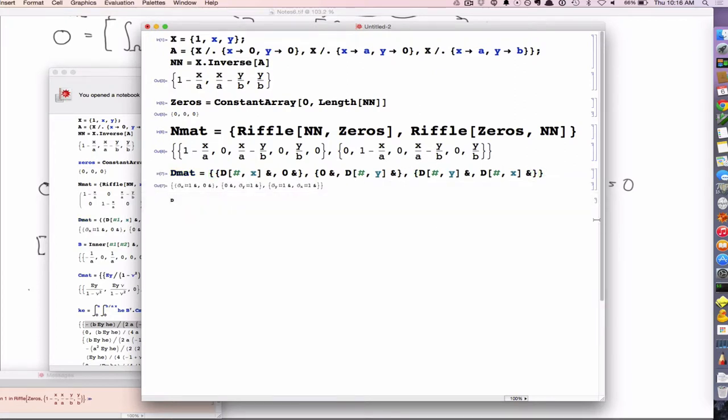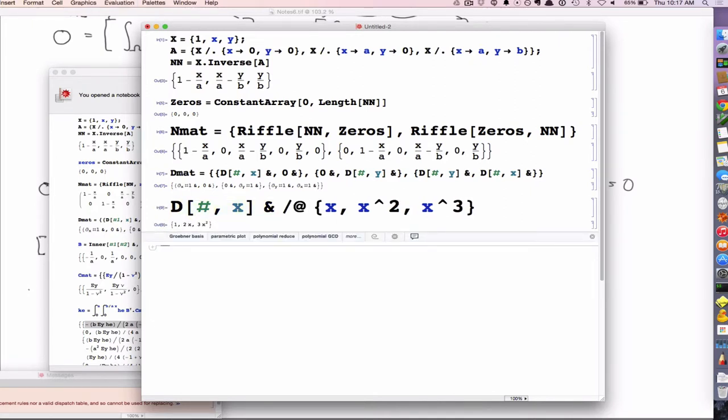So just real quick about the syntax that I'm using there. When I use this pure function notation, so if I say that D of hash with respect to X, I just define a pure function. And what I can do then is I can map that over a list. So for example, if I have X, X squared, X cubed, what I mean is I'm going to take and map this over that, such that I get the derivative of X, X squared, and X cubed. This is the derivative operator in Mathematica. The derivative of that thing with respect to X, I'm just going to put that there, put that there, put that there. And so that's just the syntax. There we go, 1, 2X, 3X squared.